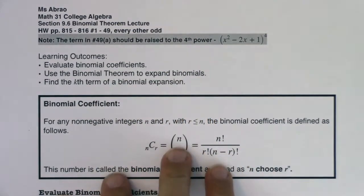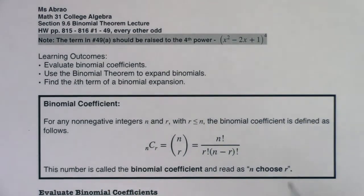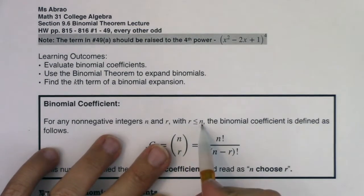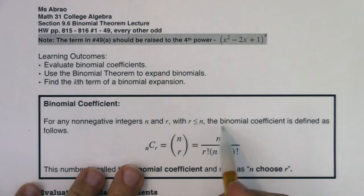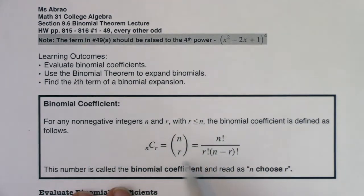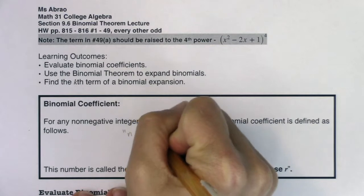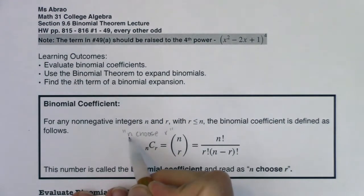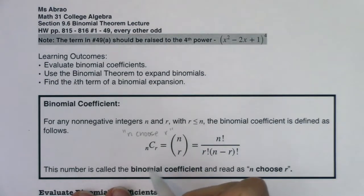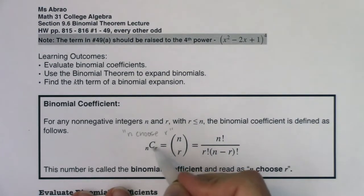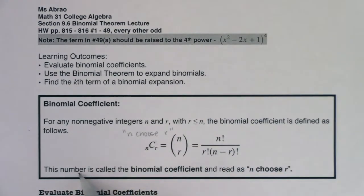The first thing we need to cover is: what is a binomial coefficient? For any non-negative integers n and r, as long as r is less than or equal to n, the binomial coefficient is defined by a formula. When you see either symbol, you'll hear me say 'n choose r.' The C here stands for choose, and this number is called the binomial coefficient.